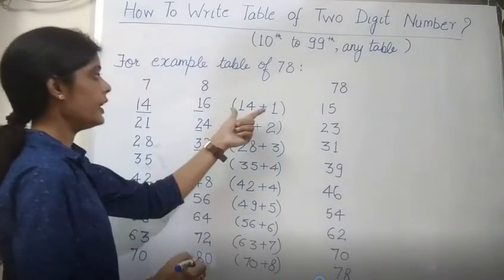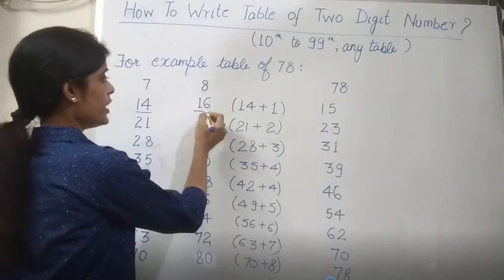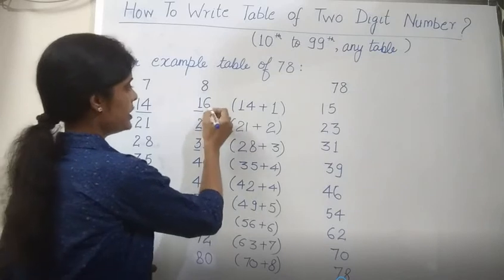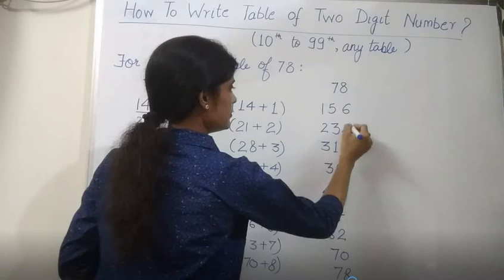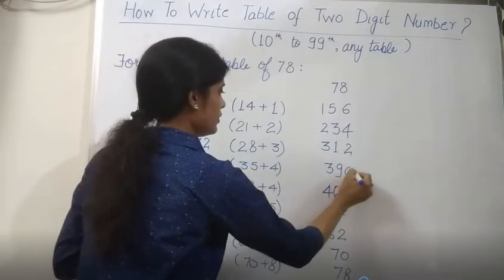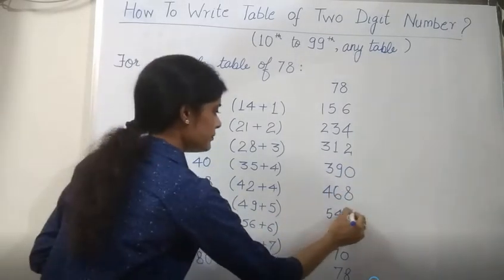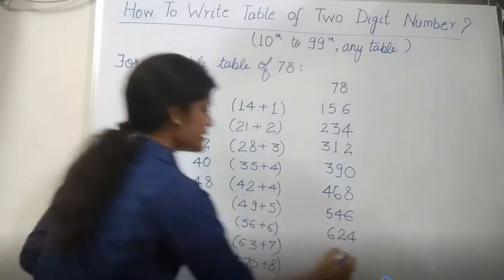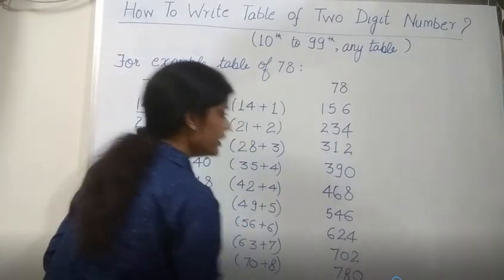We have added them. Now, what do we do in the table? The unit digit. We get the unit digits: 8, 6, 4, 2, 0, 8, 6, 4, 2, 0. Here, we get 78.